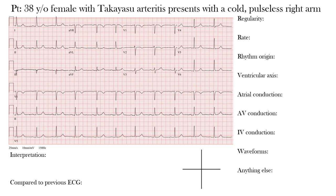Before we get started, let's review the approach we've been using to interpret EKGs. Notice that we have the patient's clinical presentation and then the EKG below. On the right side of the screen you'll see a list we'll go through before making our final interpretation. First at the top we have regularity — are we dealing with a regular or irregular rhythm? If it's irregular, we determine if it's regularly irregular or irregularly irregular.